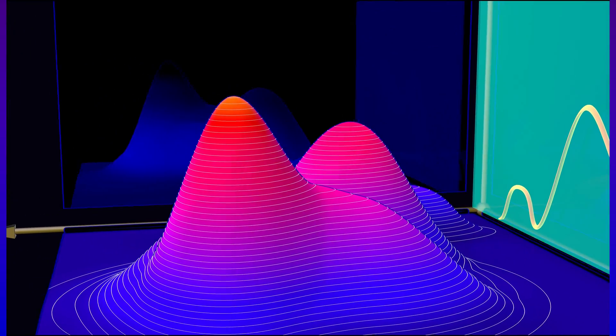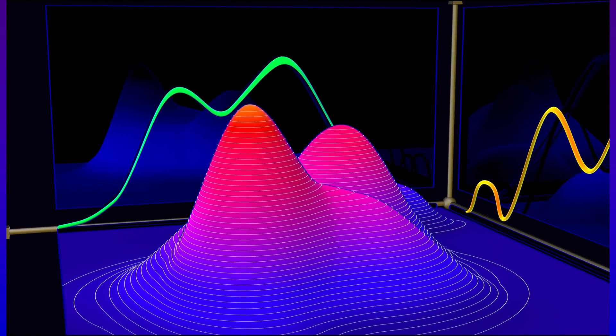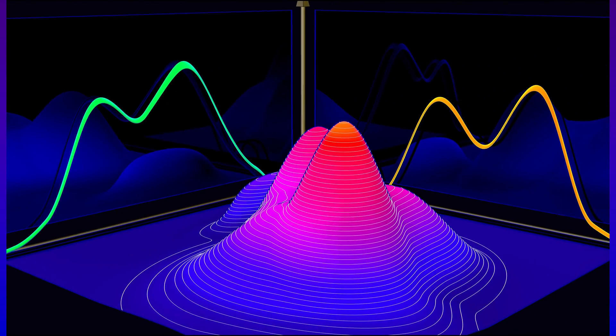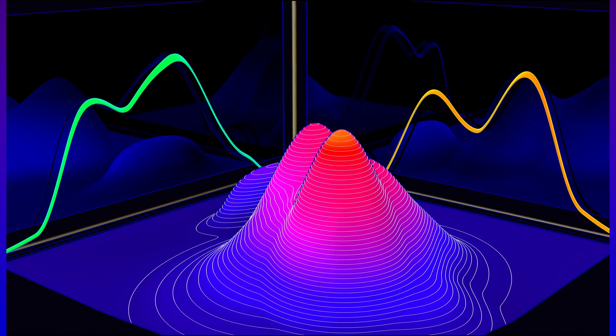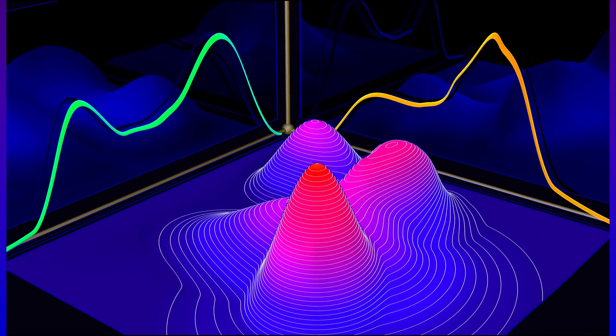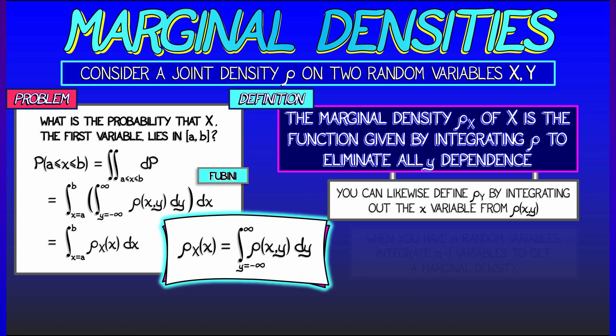Then you integrate in the other direction to get a probability density on the x-axis, and if you change your joint probability density, if you move that guy all around, then it changes the marginal densities in a way specified by the Fubini theorem. That's a nice picture, but what else can we do?